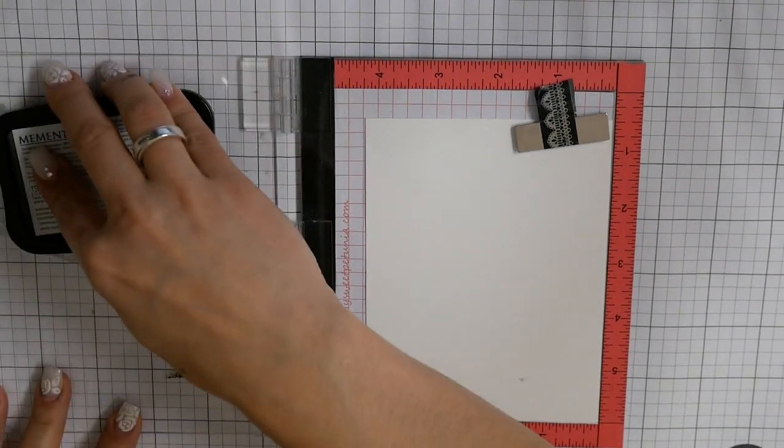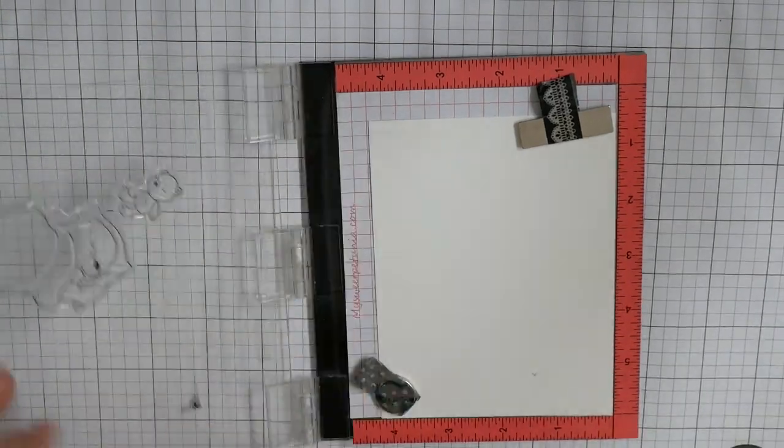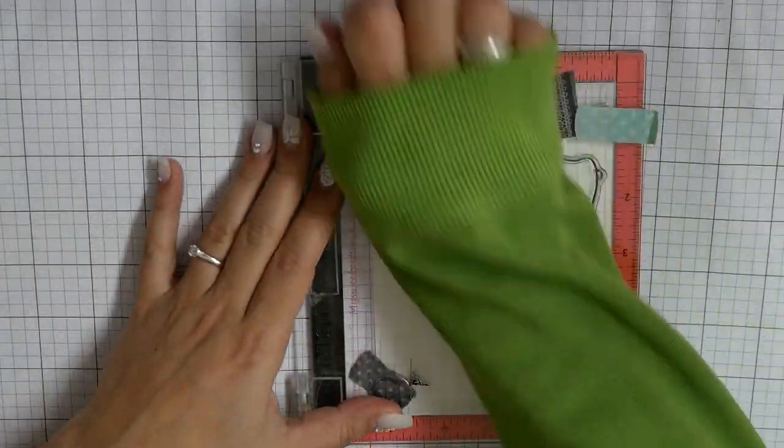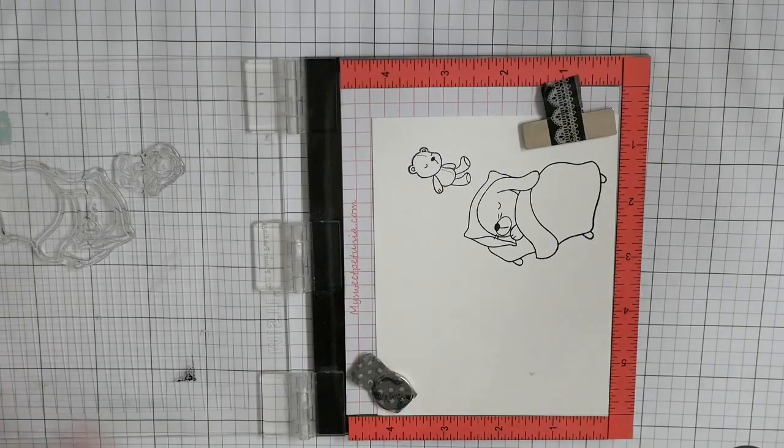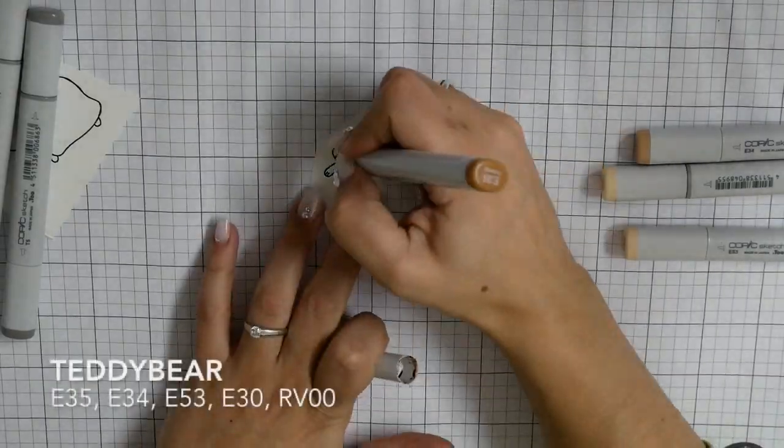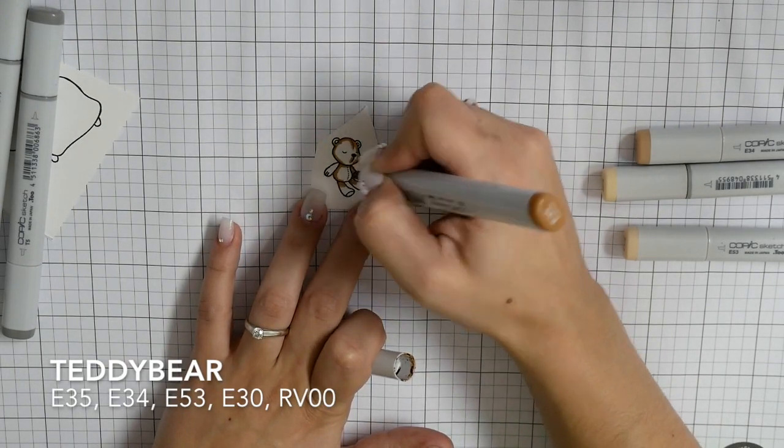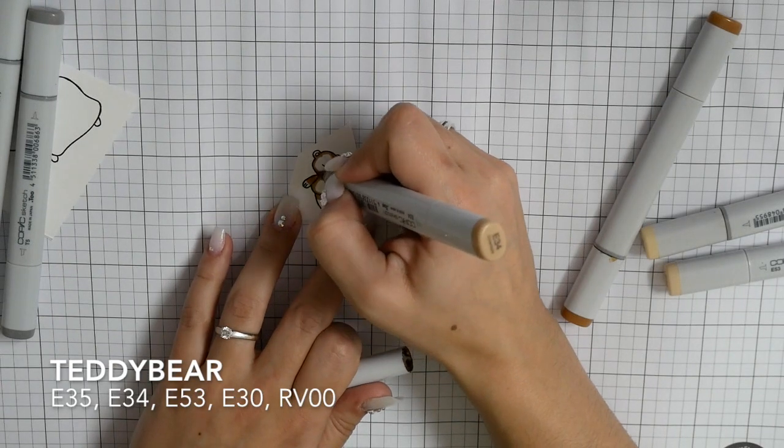I start stamping my images with my MISTI and I am using Memento Tuxedo Black ink because I want to color the images with my Copic markers. I am double stamping all the images because when they are new, sometimes they don't stamp well.